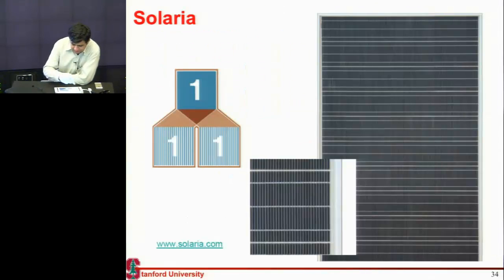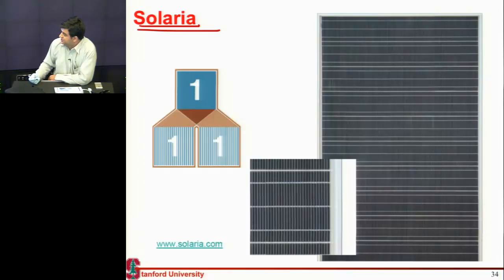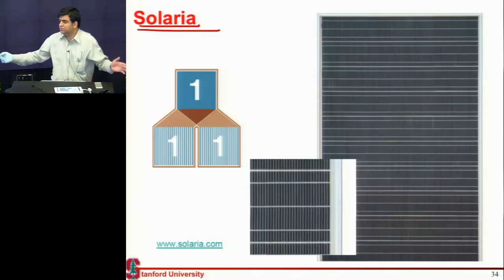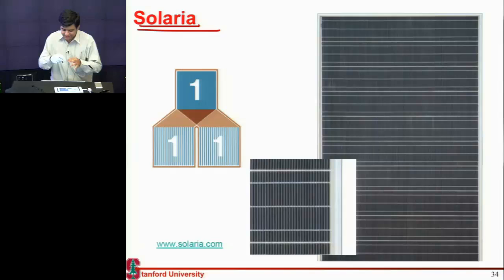So this is a Bay Area company which is using microconcentrator. And what it says is instead of having one panel, we take the same cell and make two panels. We use half the area. So we cut ourselves into these, they don't cut into these micron size slivers.